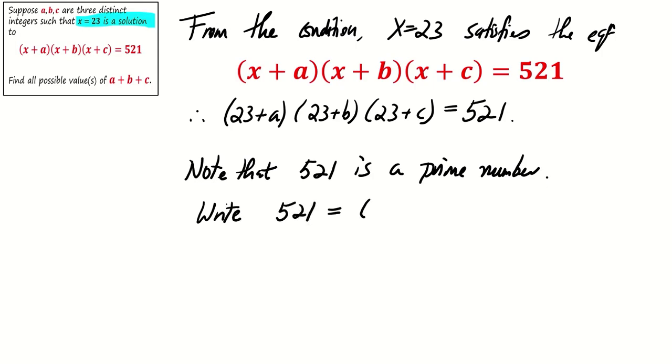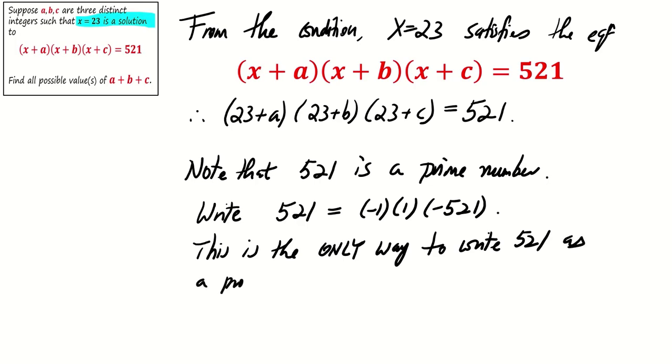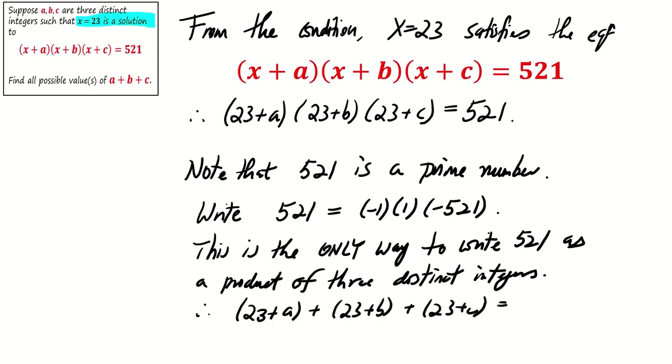It is important to note that 521 is a prime number, and we can express it as (-1)(1)(-521). Now here is the key: as 521 is a prime number, this is the only way to express it as a product of three distinct integers. Therefore, the sum (23 + A) + (23 + B) + (23 + C) equals (-1) + (1) + (-521), which simplifies to -521.